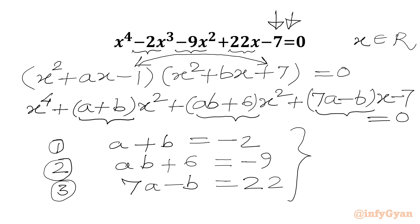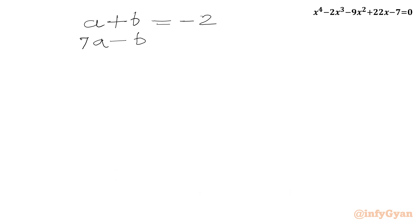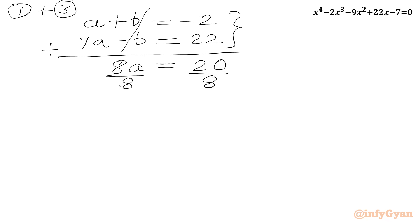Now we solve this system of equations for a and b. I will consider equation 1 and equation 3. Equation 1: a + b = -2, and equation 3: 7a - b = 22. Adding both equations, +b and -b cancel. We get 8a = 20. Dividing both sides by 8, we get a = 20/8 = 5/2.